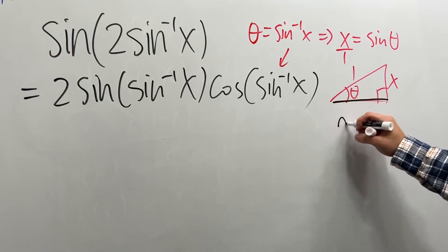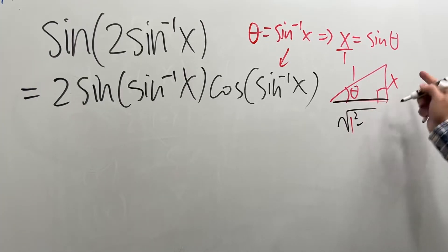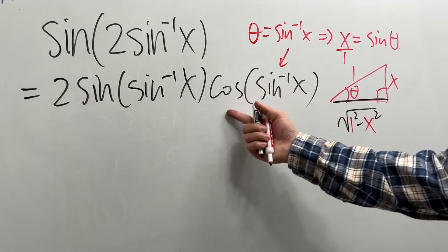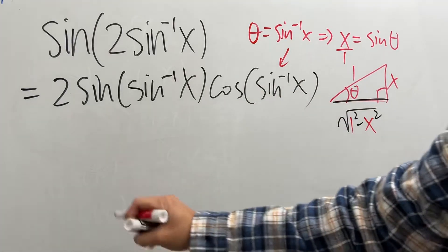This is equal to the square root of 1 squared minus x squared. So cosine is just this over that. And now we have all the information.